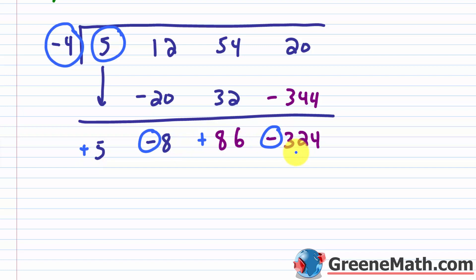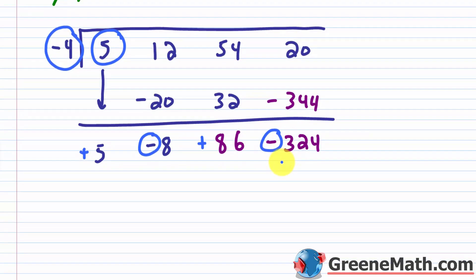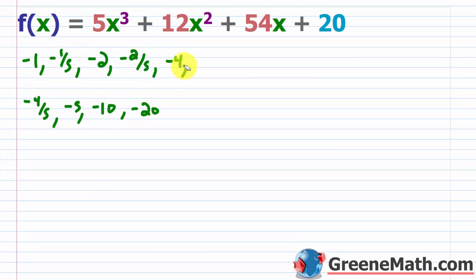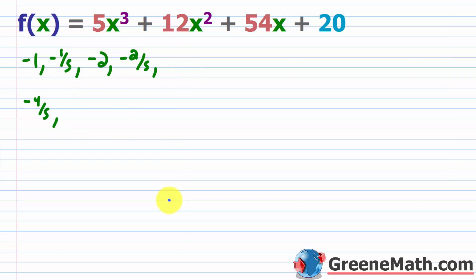I want to caution against a common mistake: if you had done this with negative 4 and you didn't find that it was a lower bound, that doesn't mean that it's not. It only says that conclusively you can say so if these situations present themselves — a negative, a positive, and alternating signs — then you do have a lower bound for sure. So now I can take negative 4, negative 5, negative 10, and negative 20 off the list, because those values are less than negative 4.